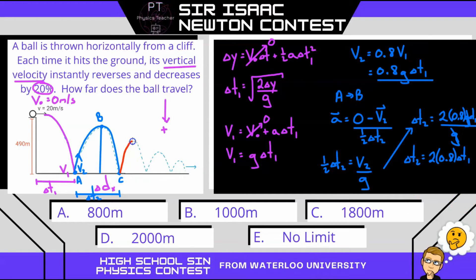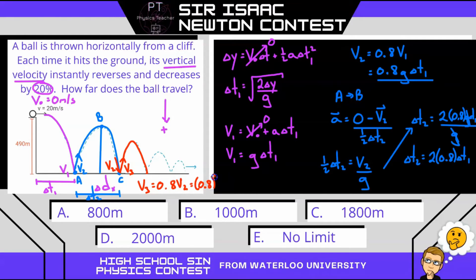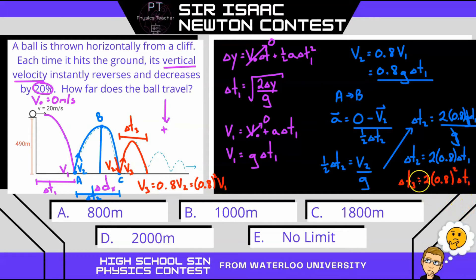You can repeat this same process for the next parabola and beyond. V3 equals 0.8 times V2, and since V2 equals 0.8 times V1, that gives 0.8 squared times V1. Similarly, delta T3 equals 2 times 0.8 squared times delta T1, and delta T4 equals 2 times 0.8 cubed times delta T1, and so on. So we have a pattern we can follow.